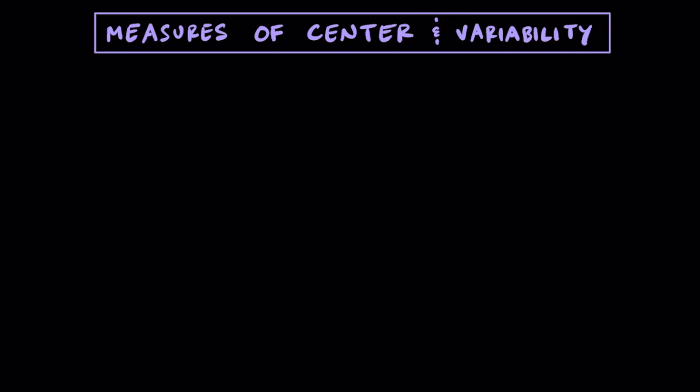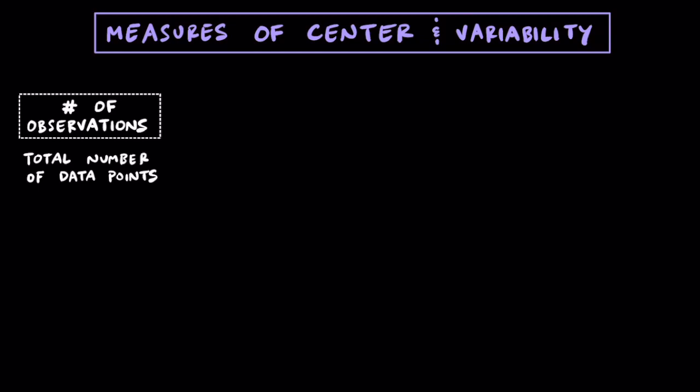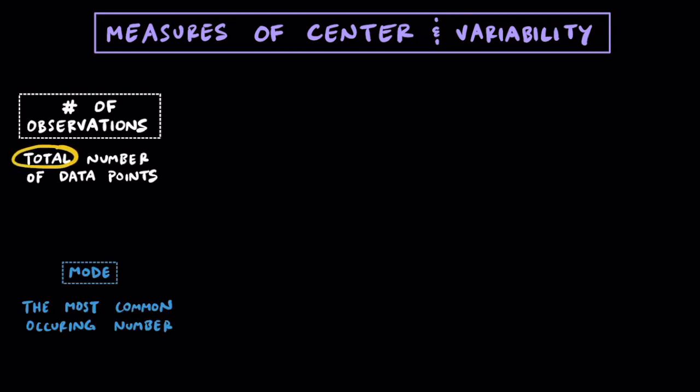So after we ask a statistical question, we can actually collect some information about all of that data. Typically, we start by looking at how many observations, or the number of data points, that we have. Another important piece of information is the mode, which is the most common occurring number.